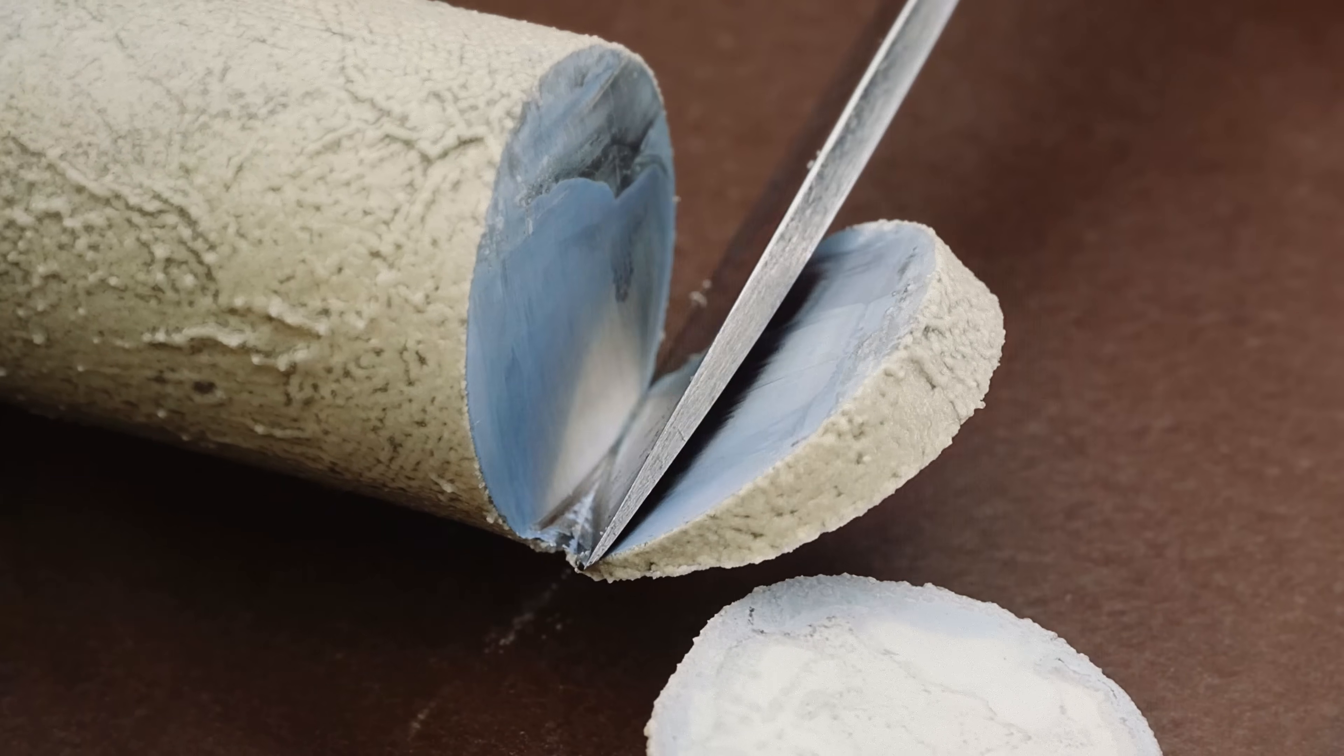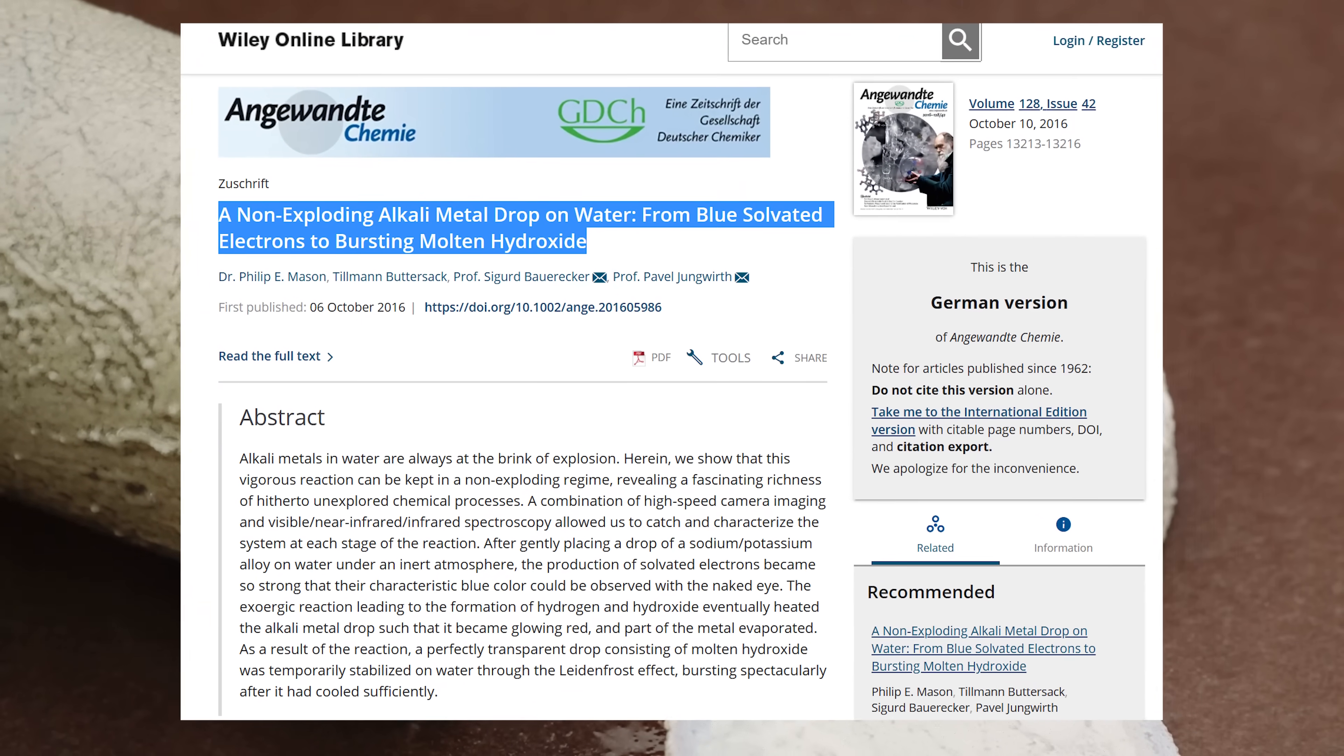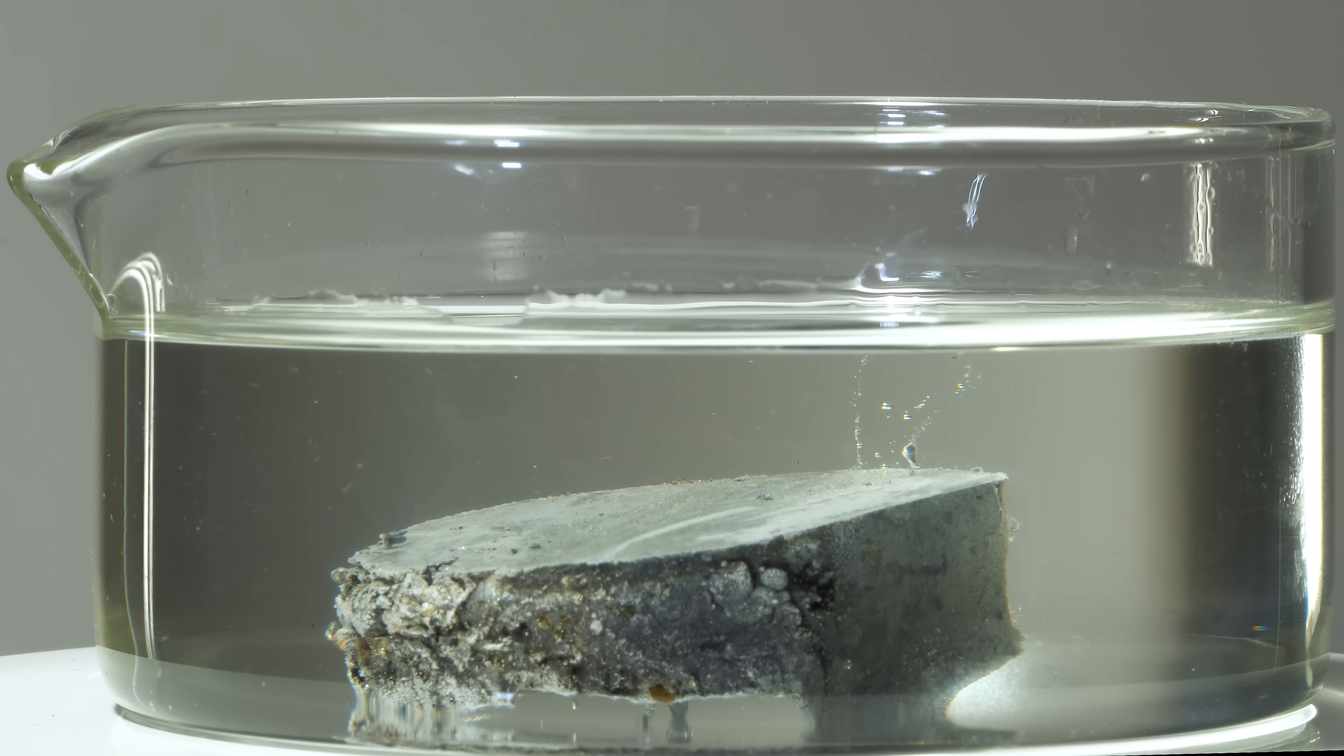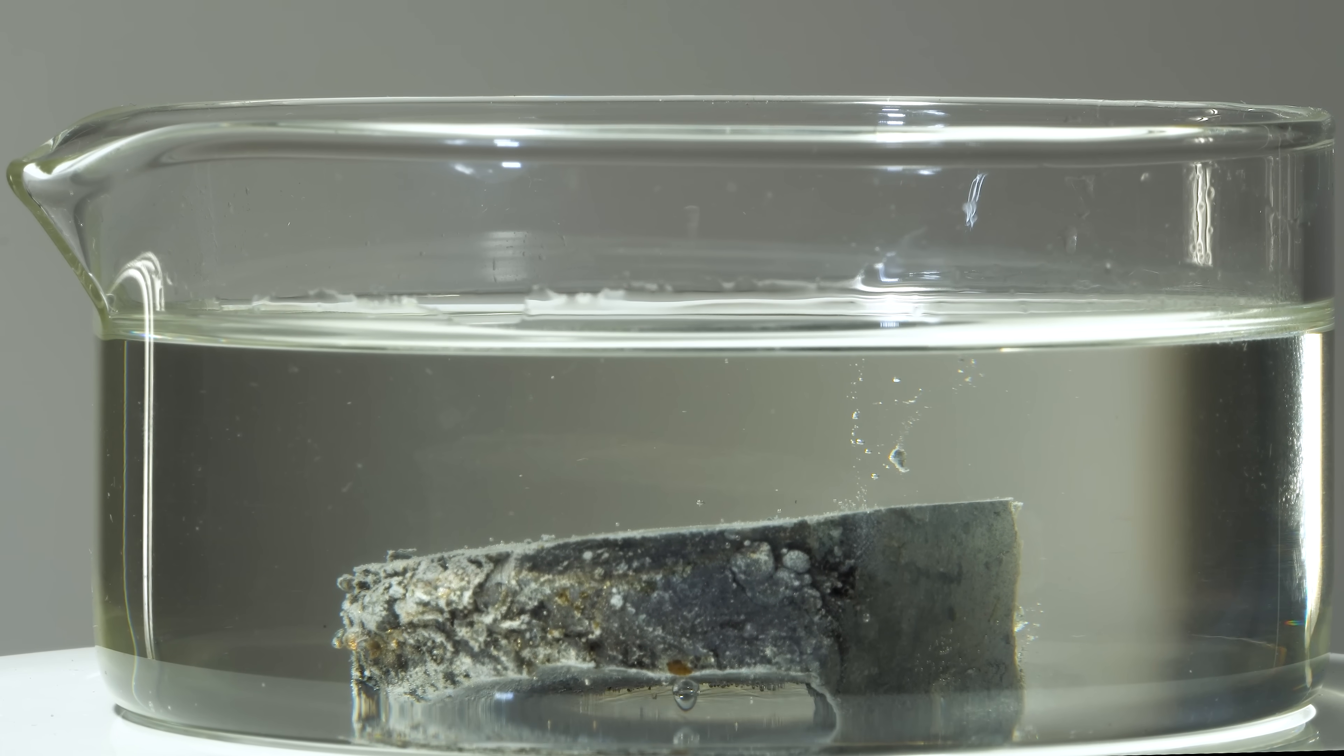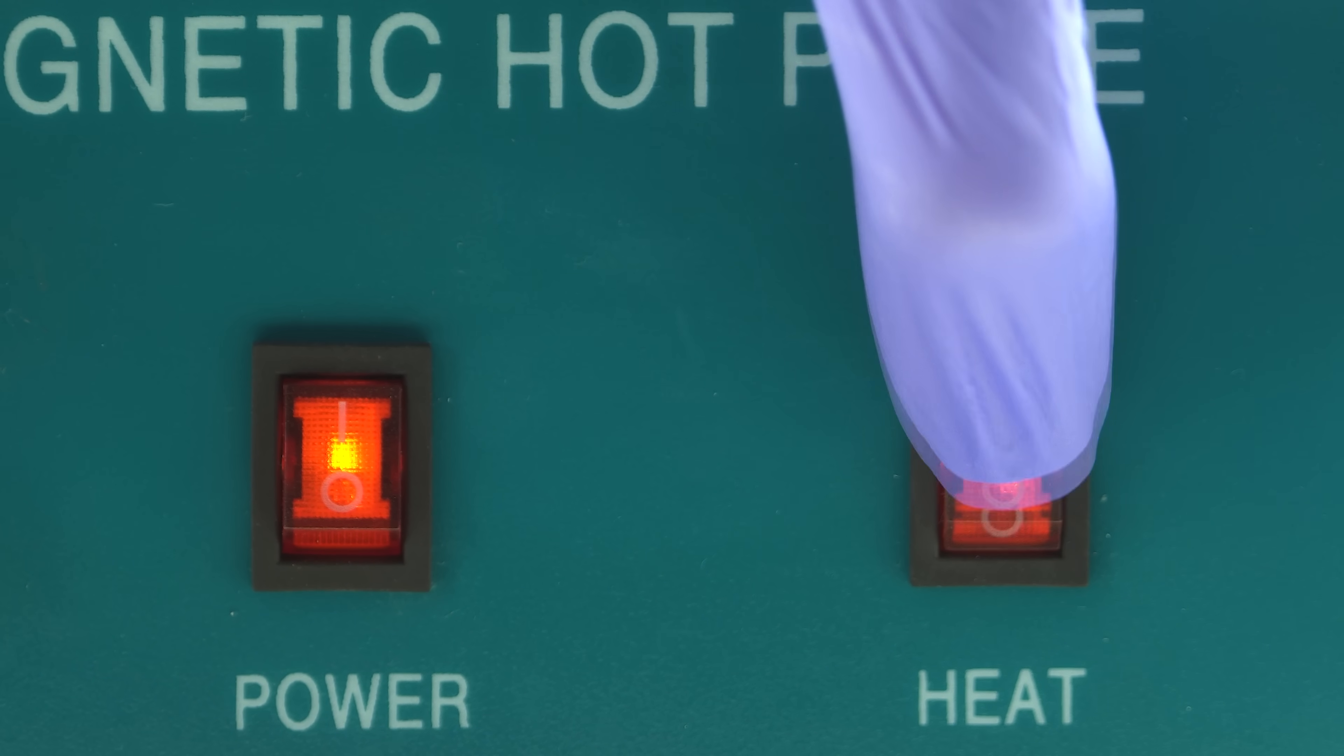In short, we can observe the blue color of solvated electrons not only when alkali metals are dissolved in liquid ammonia, but also in water. Now I'm going to create a sodium-potassium alloy by mixing pieces of sodium and potassium in hot oil to showcase this effect.